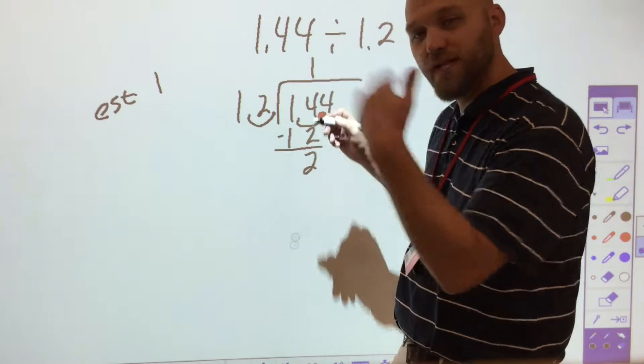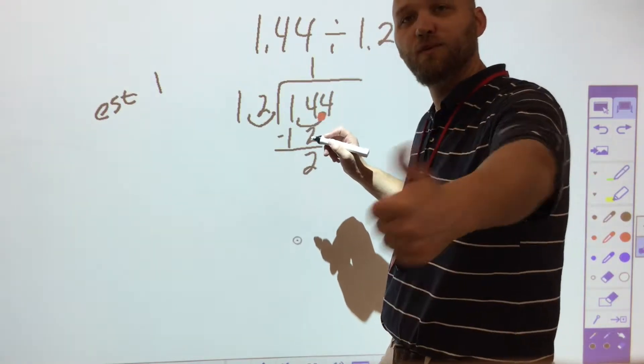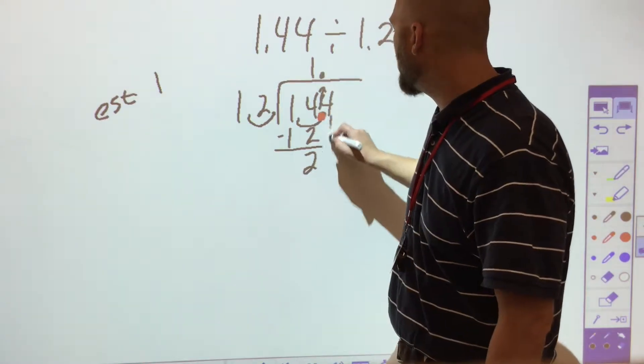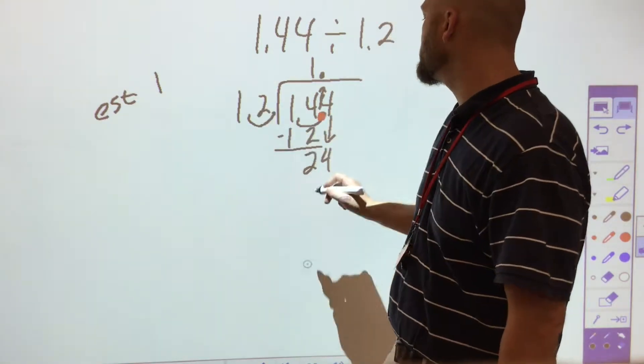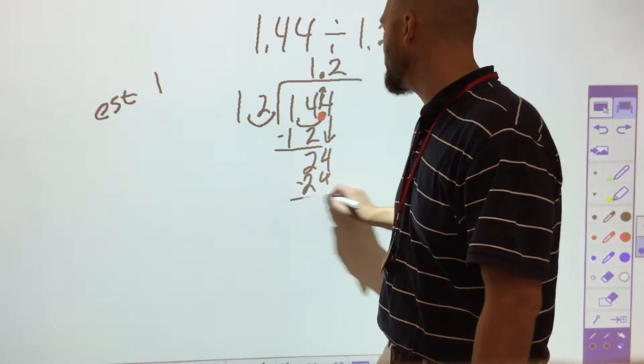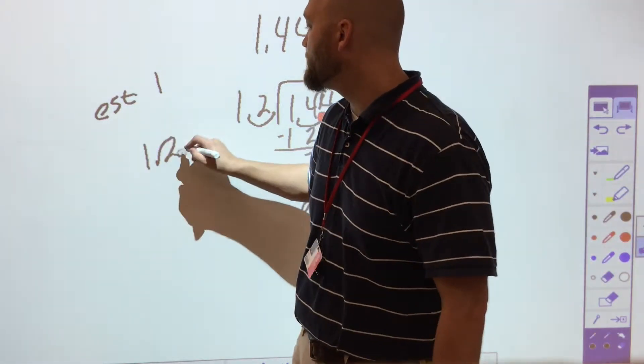I bring down the 2. When I subtract that 2, I hit my decimal. What do I do when I hit my decimal in division? I move it up. Bring my decimal there. Bring the next number down. 12 goes into 24 two times. That gives me 24. And of course, there's nothing left over.